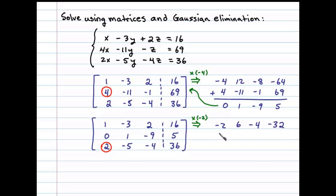Now we'll write the third row right underneath that and then add them together. That'll give us 0, 1, negative 8, and 4. Now we'll use this to replace the third row. Now finally, we need to replace the second element of the third row here with a 0.